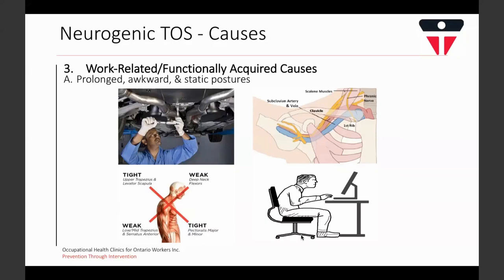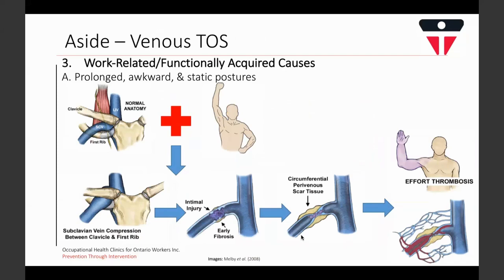Regarding venous TOS, researchers recognize its development as a chronic process due to continuous injury and healing of the subclavian vein during arm elevation. Persistent pinching of the vein between the clavicle and the first rib during overhead arm movements leads to venous injury, fibrosis, and scar tissue development, which can progress to full obstruction of the vein. Collateral blood vessel formation may prevent symptoms initially, but these vessels can become occluded due to clotting or continued overhead arm use, resulting in the symptoms of venous TOS.